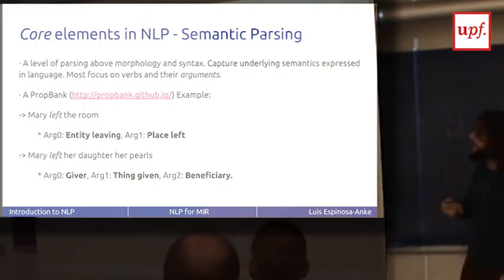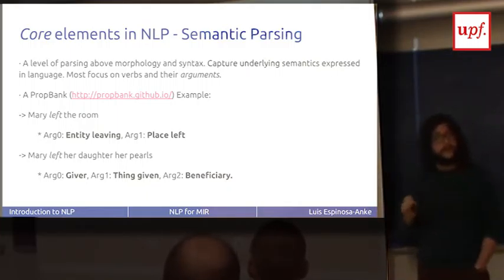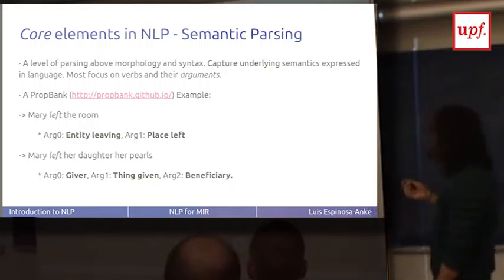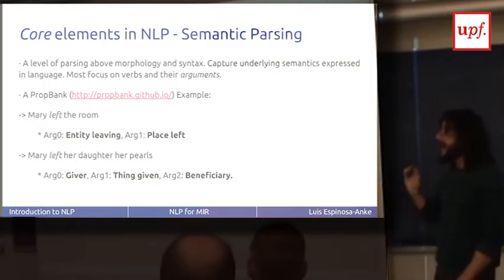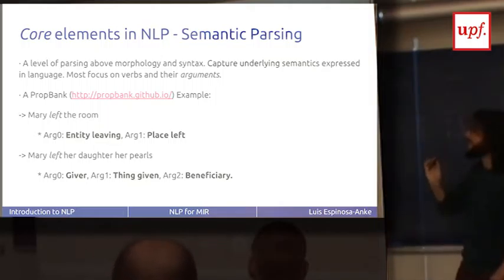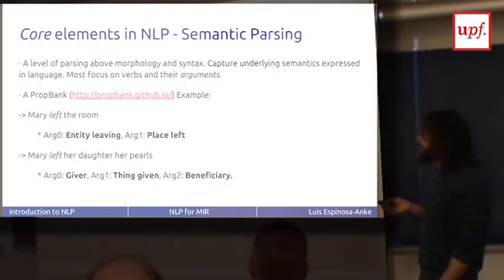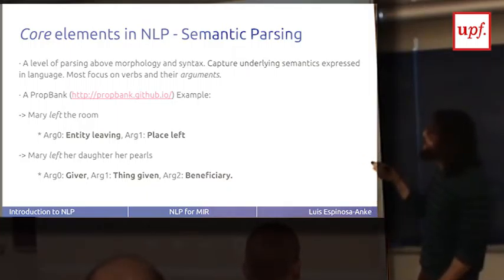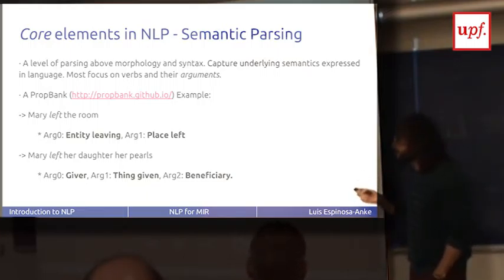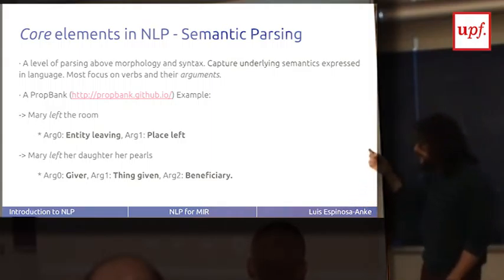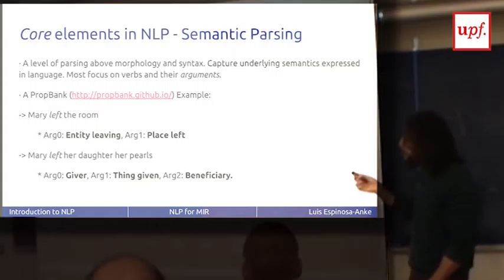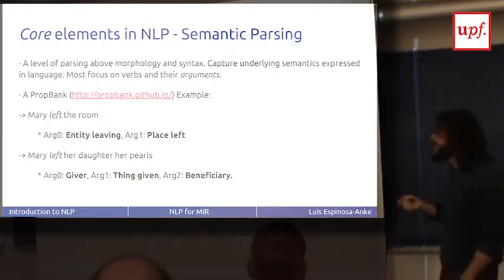One step further is semantic parsing, mostly used to treat verbs. Using PropBank as an example: for every verb and every sense of that verb, you expect argument slots to be filled by information in the sentence. In 'Mary left the room,' argument zero is the entity leaving and argument one is the place being left. But in 'Mary left her daughter to her parents,' the sense of 'leave' is different — the arguments are different in number, representing a giver, something human, and a beneficiary.